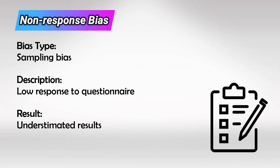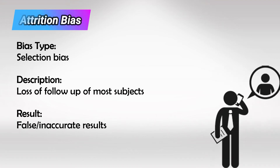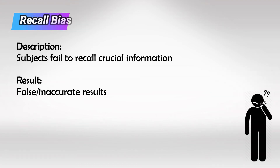Speaking of questionnaires, non-response bias is when you have low response to your questionnaires. Attrition bias is the result of loss of follow-up. Recall bias, which is very common in retrospective cohort studies, is when the subjects fail to recall crucial information.